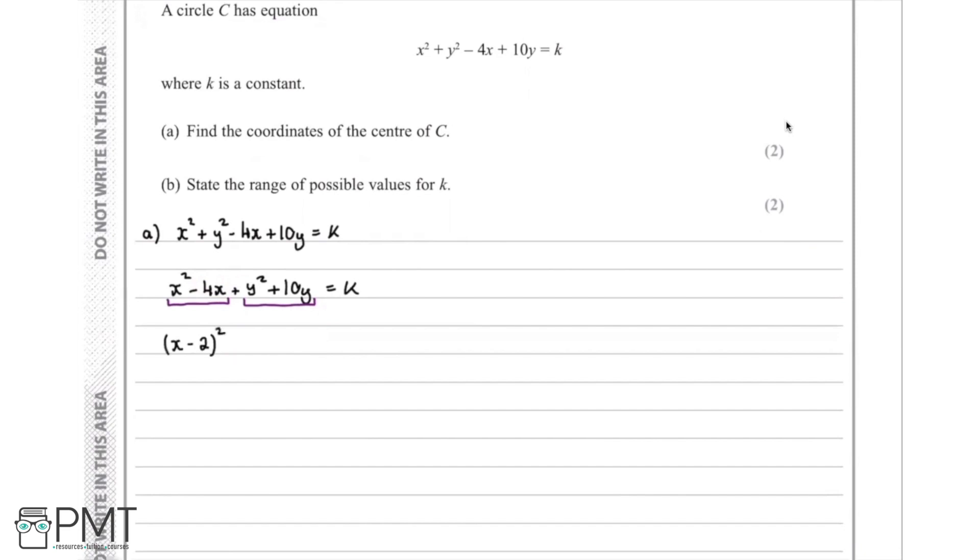And then we subtract this value, the negative 2, we square that. And then we have that will be minus 4. And then we do the same for the y terms, which gives us, we add that on. Then we have y and half of 10 is 5, so y plus 5 squared, and then 5 squared is 25, so we subtract 25. And that is equal to k.